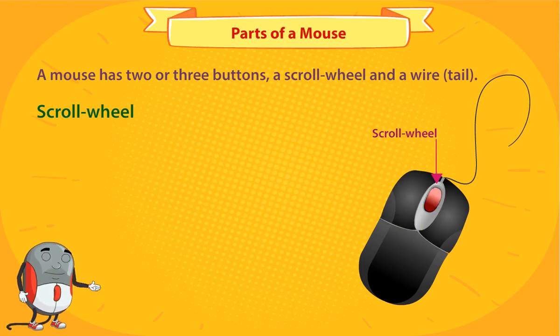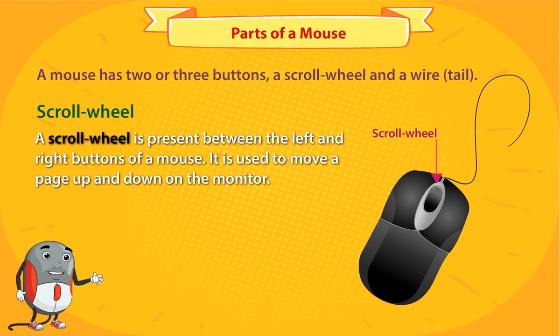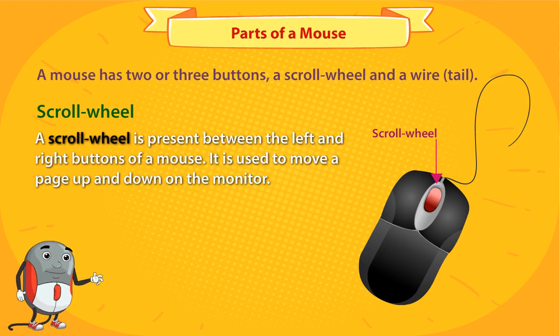Scroll wheel. A scroll wheel is present between the left and right buttons of a mouse. It is used to move a page up and down on the monitor.